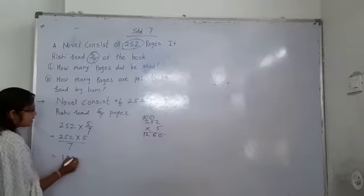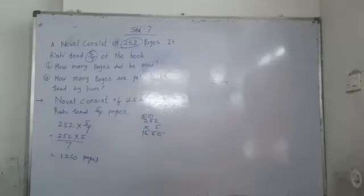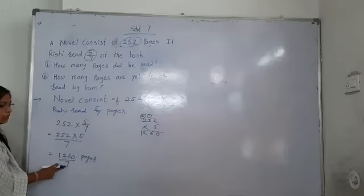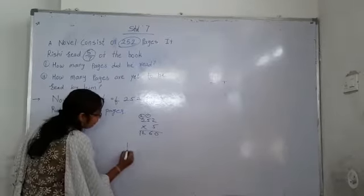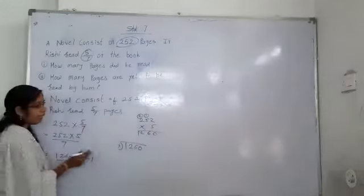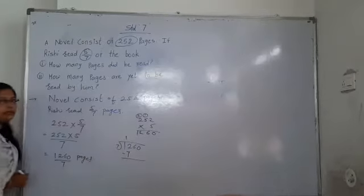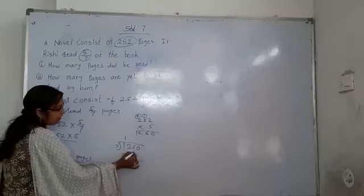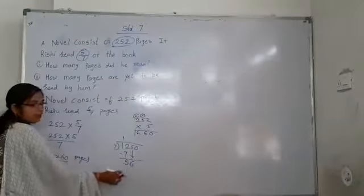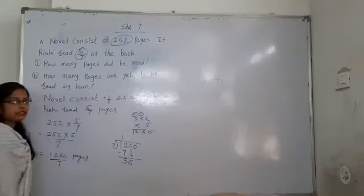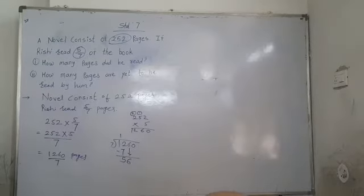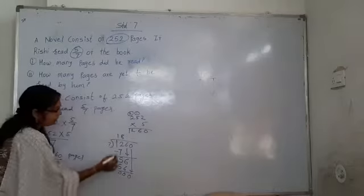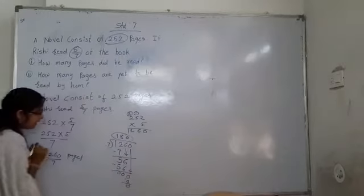So 1260. 1260 pages divided by 7, our denominator. Now divide 1260 by 7. 7 once, 5 remains. Take that 6 down, making 56. 7 into 56 is 8. 7 times 8 is 56, remainder is 0. Take 0 down, 7 into 0 is 0, remainder 0. Our answer is 180.